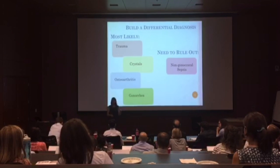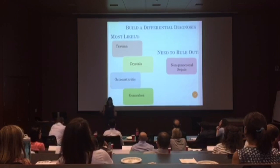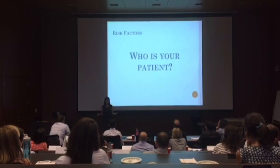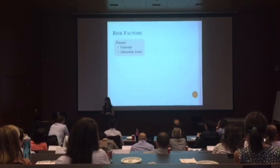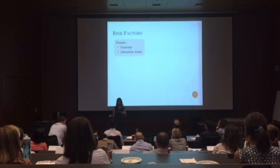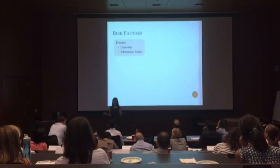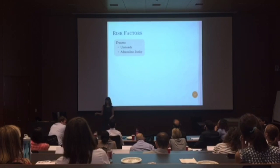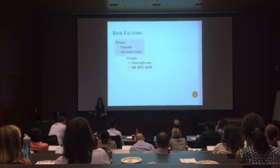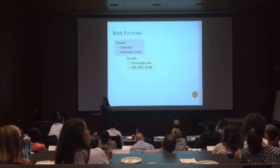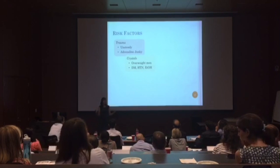So you've crafted your differential diagnosis. Next, you need to ask yourself: who is my patient? What are their risk factors? For trauma, they might be unsteady — elderly, with a history of falls — or a weekend warrior doing extreme sports that put their joints at risk of injury. For crystals, you might think of someone who is male, overweight, has diabetes, hypertension, and high alcohol intake.